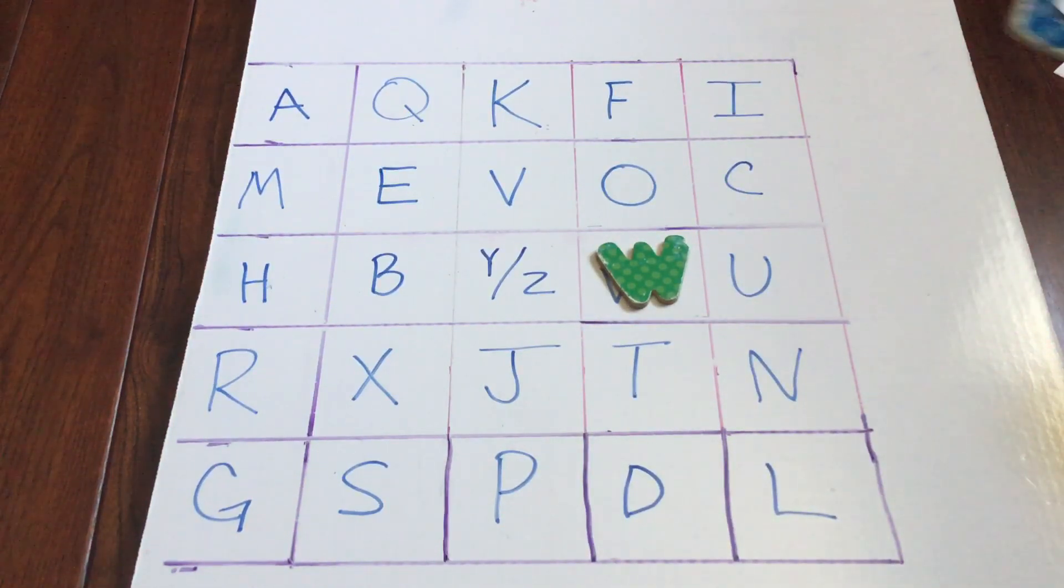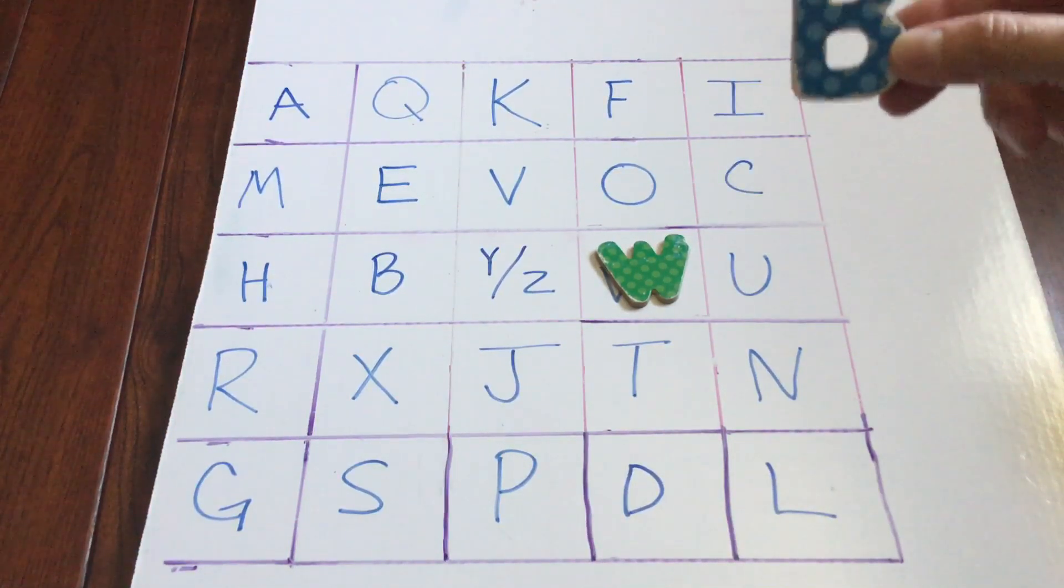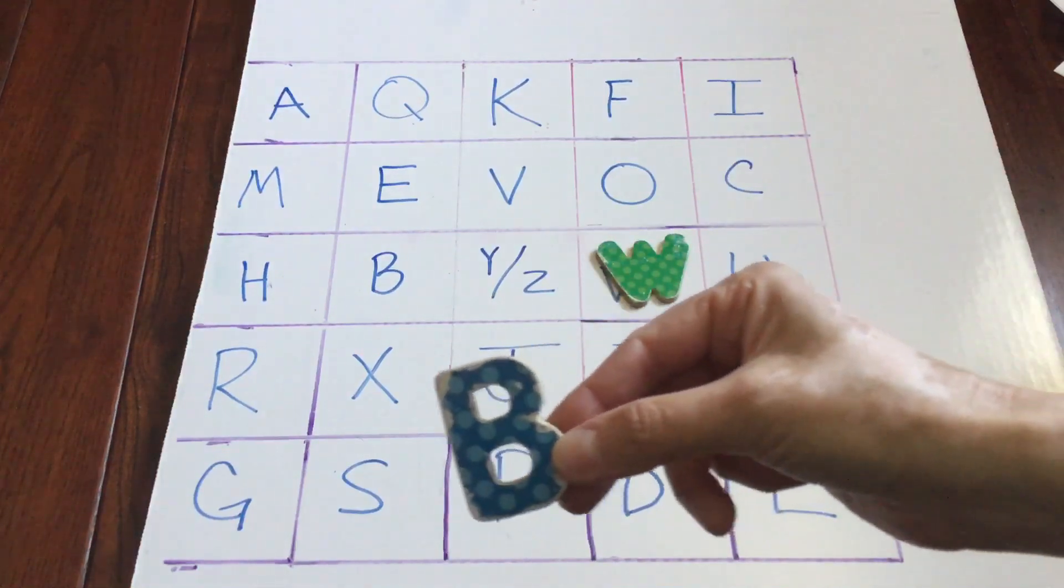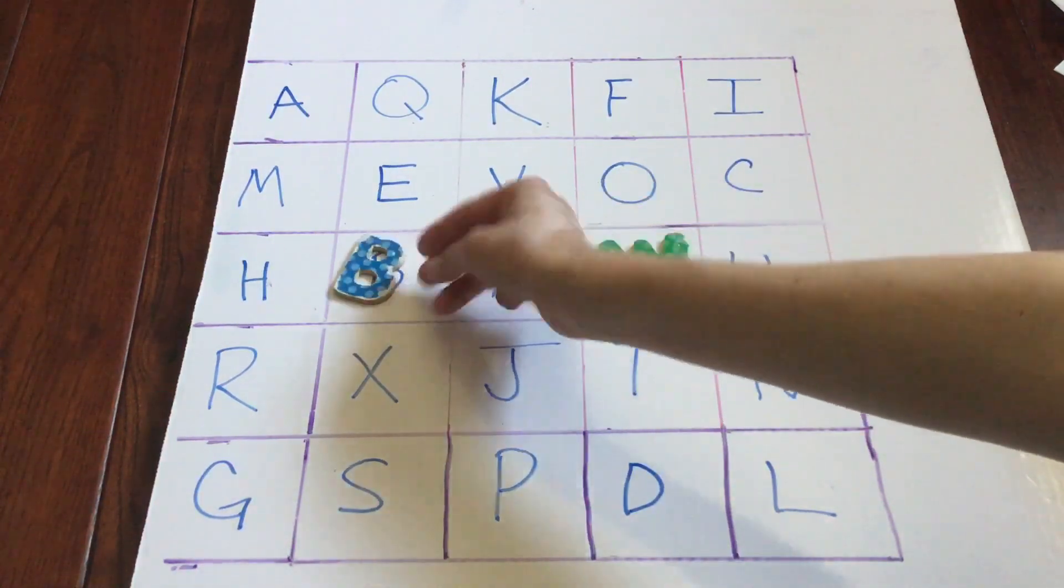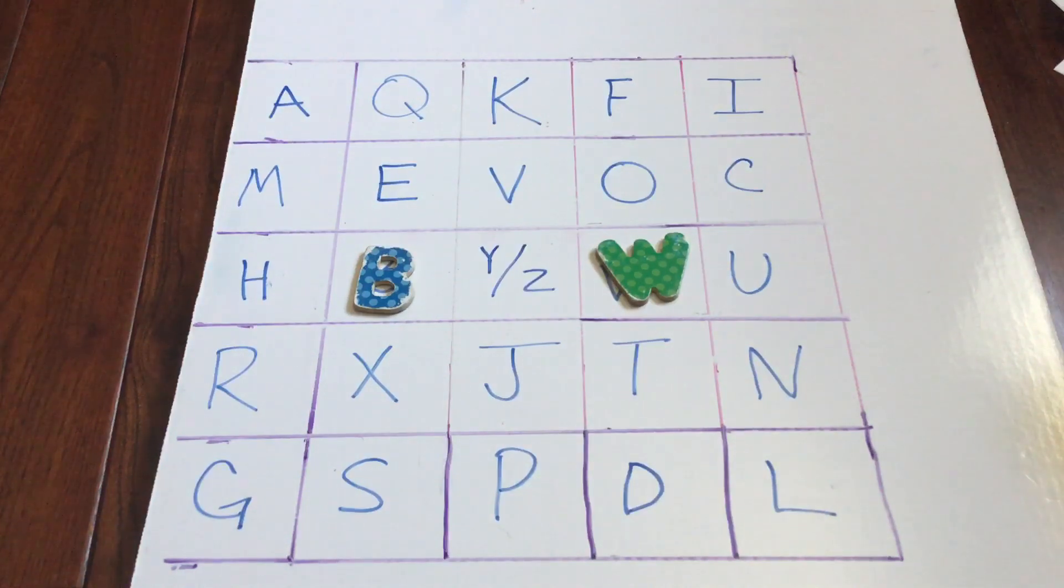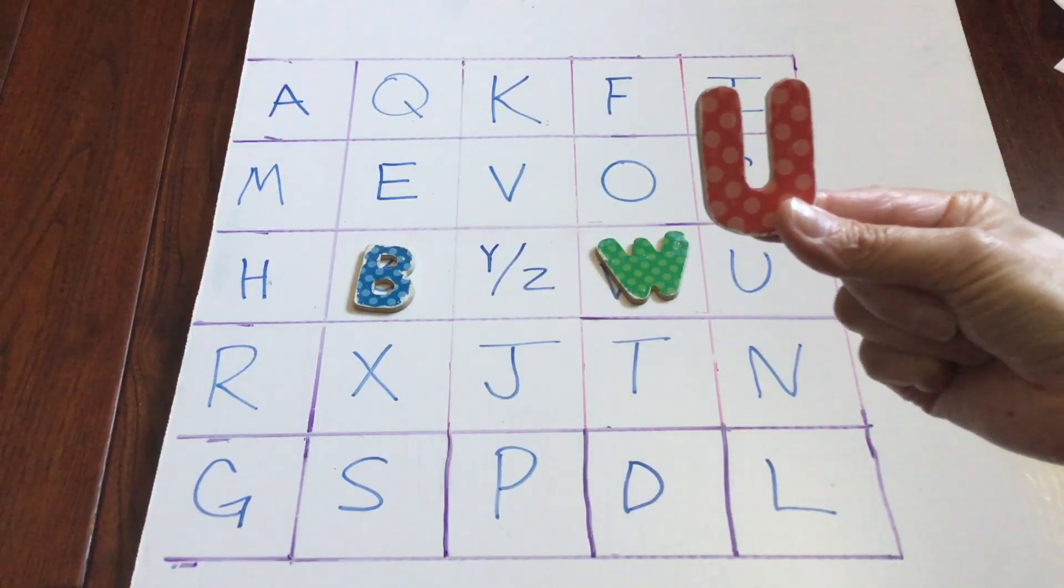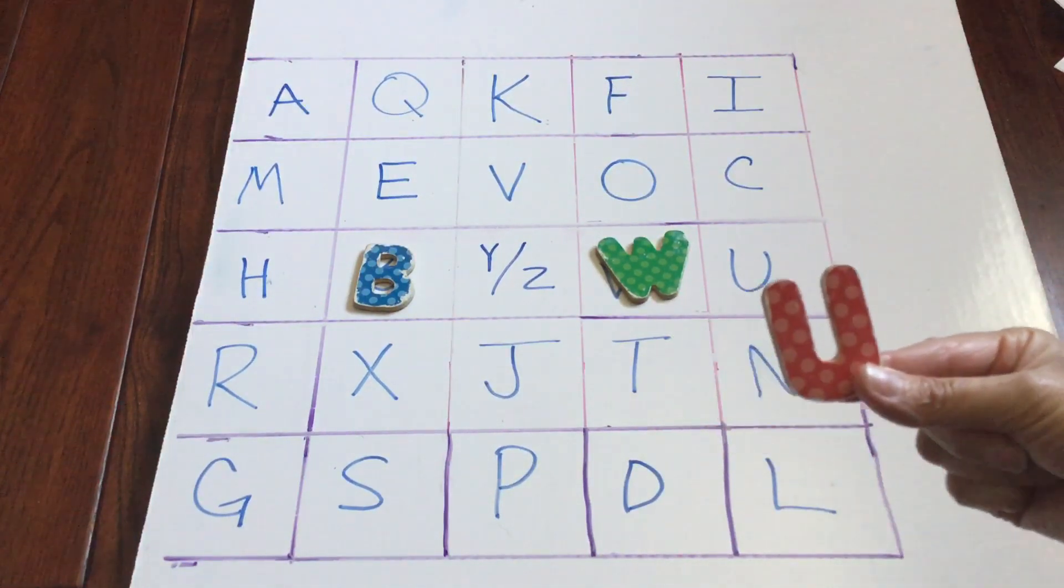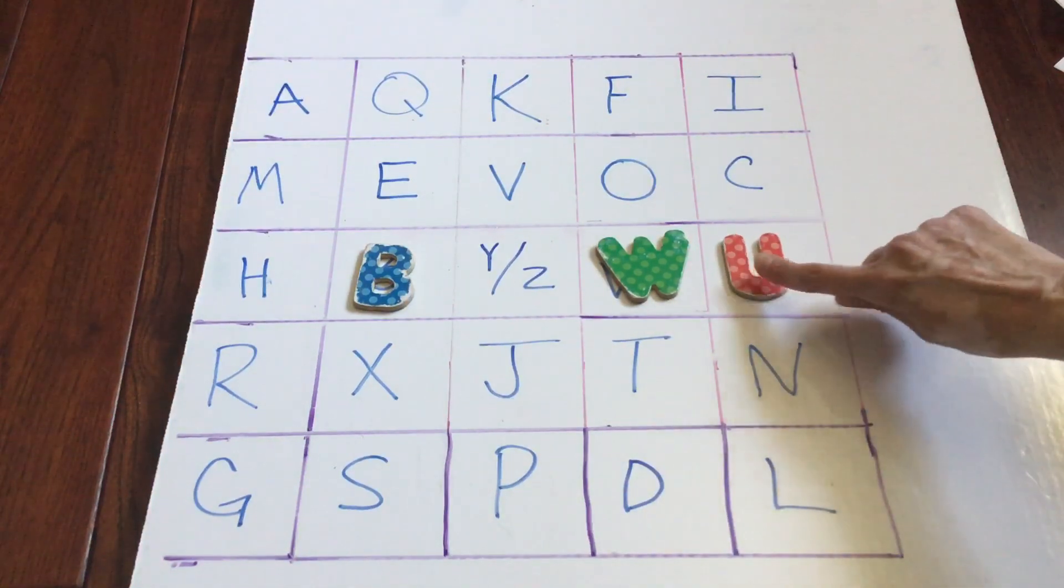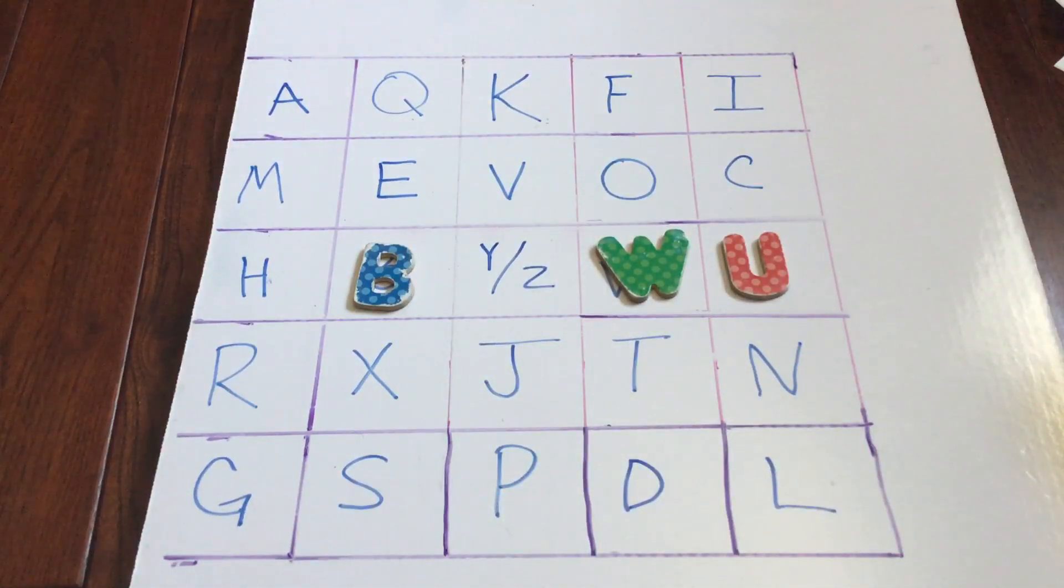My next letter is a B. Do you see where the B goes on the board? Did you find it? Good. Right there. The next letter is, say it with me, U. That's right, the letter U. Do we see it? Where is the letter U? Wow, we're doing really good, friends. We already have three in one row. If we get two more, that's bingo.